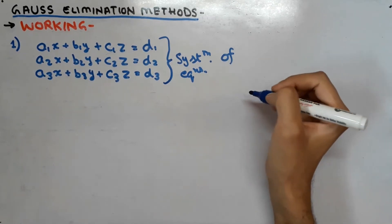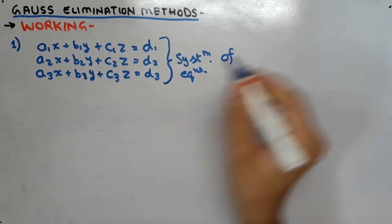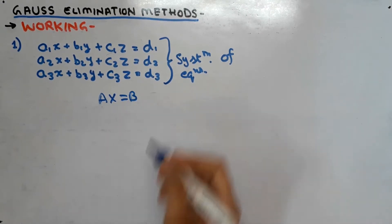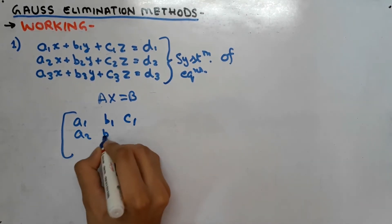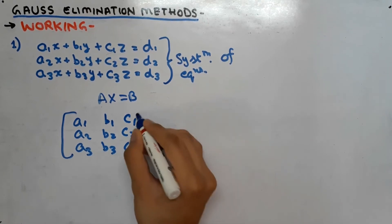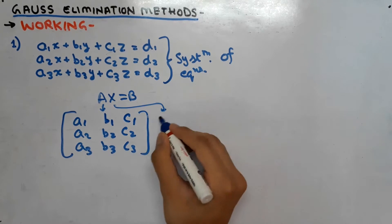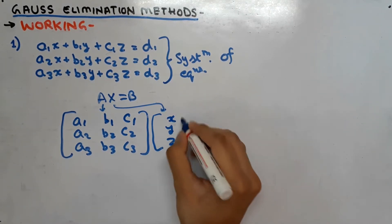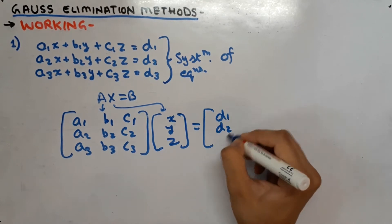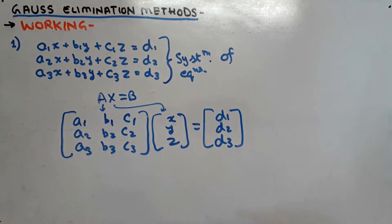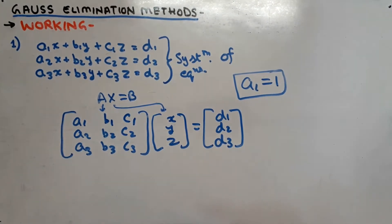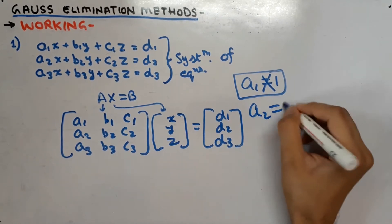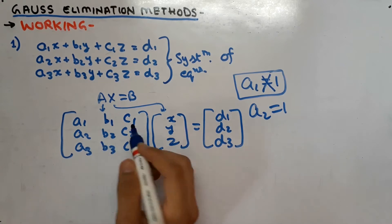Consider that a system of linear equations is given to us. Our first step is to convert it into a matrix, that is Ax = b. We write it as a matrix with a1 b1 c1, a2 b2 c2, a3 b3 c3. Matrix x is [x, y, z] and matrix b is [d1, d2, d3]. Important: the equation with coefficient of x equal to 1 should be placed on top — if a1 = 1, place it first; if a2 = 1, place that one first.